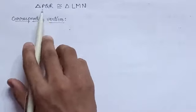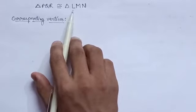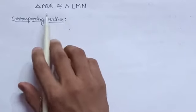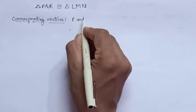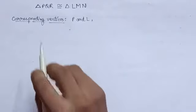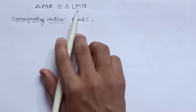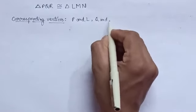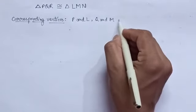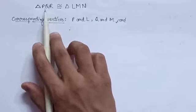In triangle PQR, you can see that the first letter is P, and in triangle LMN, the first letter is L. So the first pair of corresponding vertices is P and L. Again, in triangle PQR, the second letter is Q, and in triangle LMN, the second letter is M. Hence the second pair of corresponding vertices is Q and M. And the third pair is R and N, that is the last letters of these two triangles.